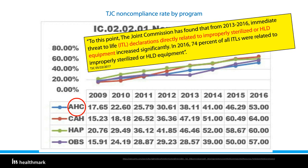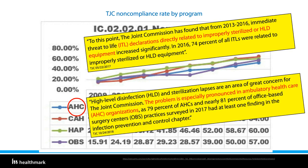One might say, 'That was 2016—surely we've improved.' But a year and a half later, Joint Commission again cautioned that ambulatory care and office-based surgery centers are especially prone to risk. At the beginning of 2020, Joint Commission highlighted their top 10 most challenging ambulatory care standards for 2019. Not surprisingly, IC02-0201 was still at the top of the list. The past several years have brought an increasing tendency for accreditation surveys to focus more than ever on device processing.